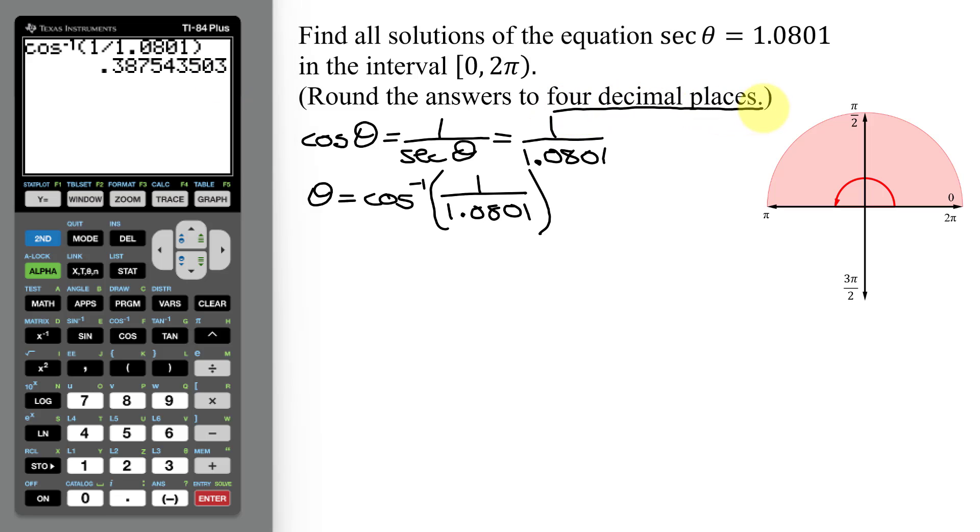I need to round it to four decimal places. 1, 2, 3, 4. That's the position of the 5. The 4 is not going to round that up. So I know theta equals 0.3875. So this is one solution for this linear trig equation.